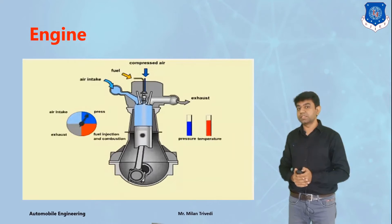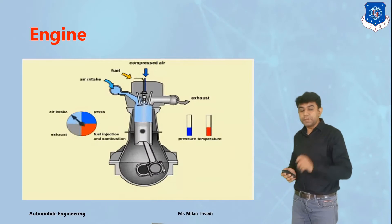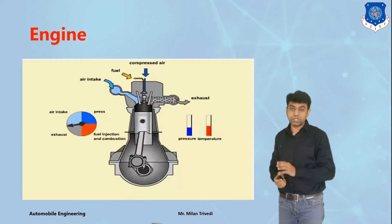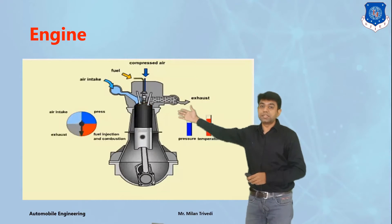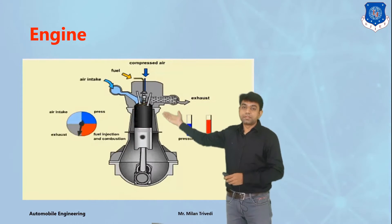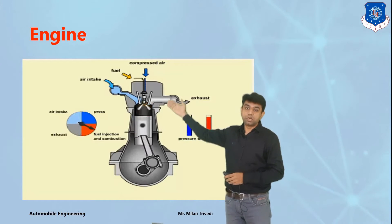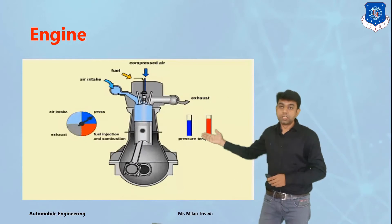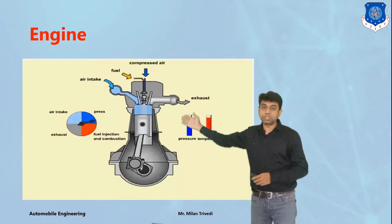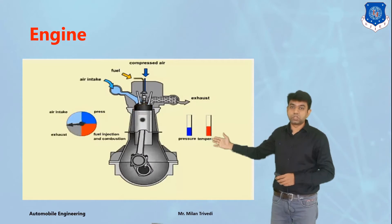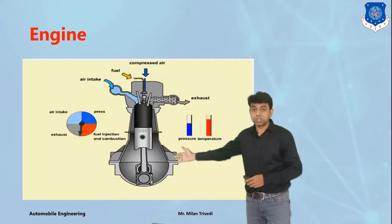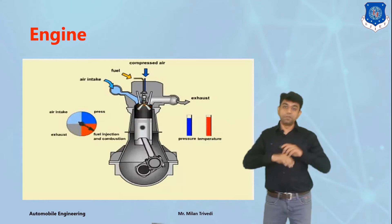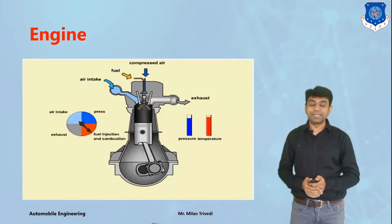The second chapter covers engine testing. In engine testing, there are numerous parameters to measure — for example, the volume of air drawn in during the suction stroke, the amount of fuel consumed by the engine, the pressure generated inside the combustion chamber, the temperature rise, the amount of brake power generated at the engine shaft, and the indicated power generated. These are the different parameters evaluated under engine testing.